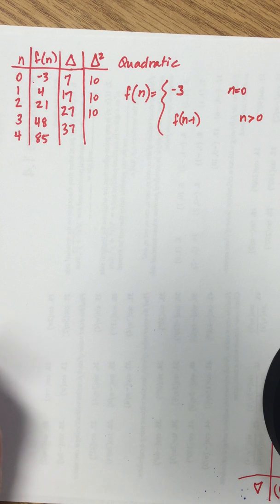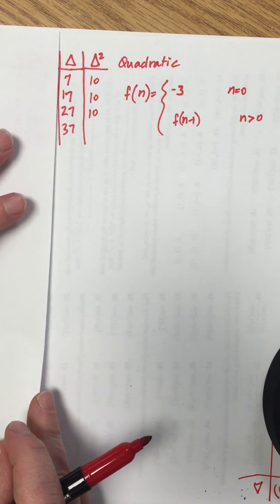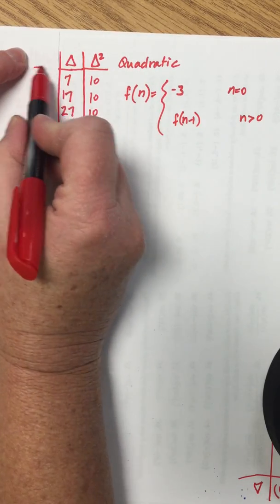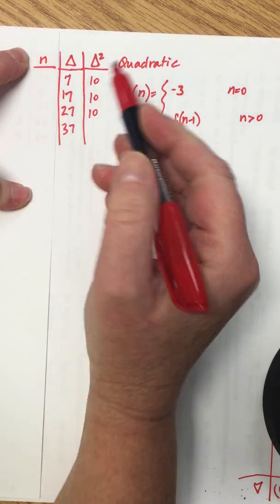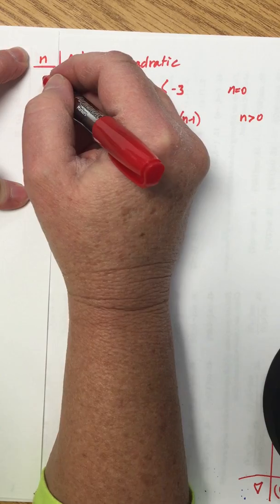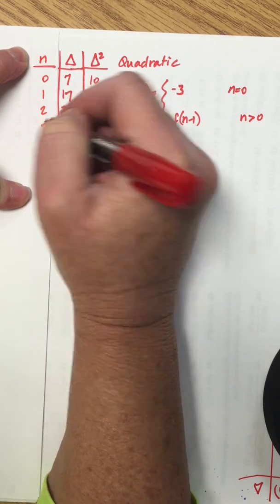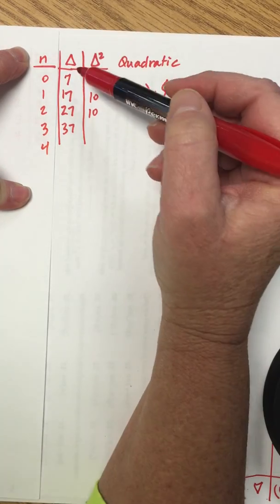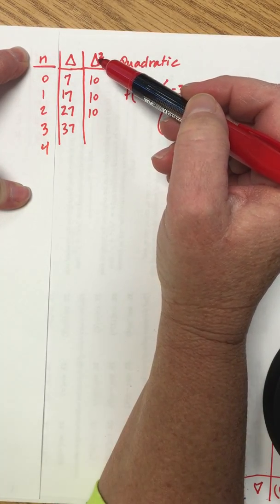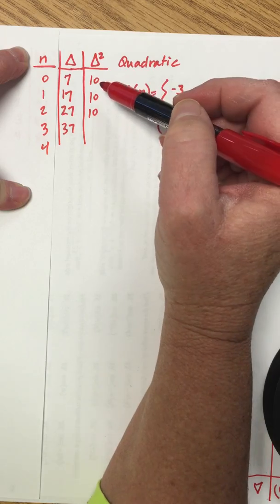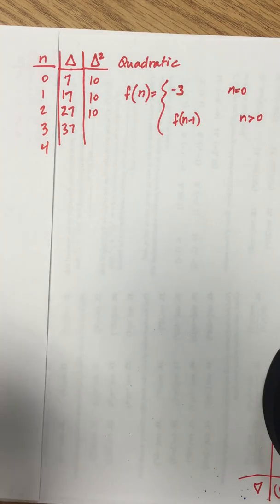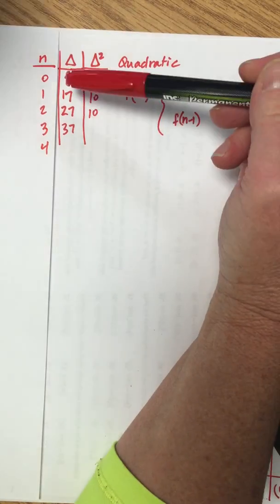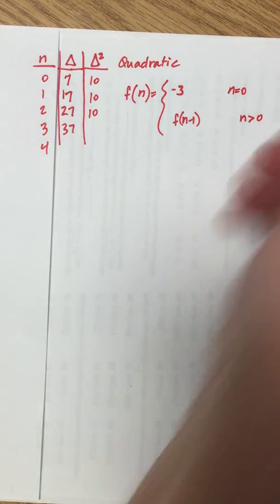So let's pretend for a moment that we have this table that the first differences are our outputs and our inputs are 0, 1, 2, 3, and 4. Then that means that our second differences would actually be our first differences and that would mean that we have a line, that this output right here is linear, and we're going to take advantage of that fact.